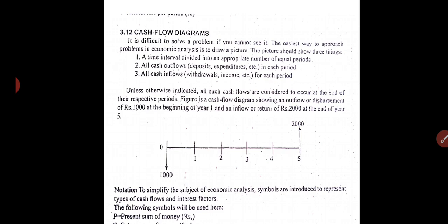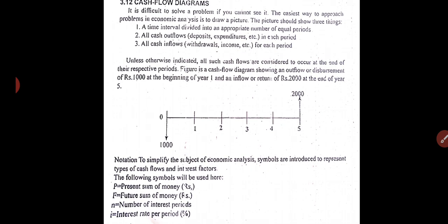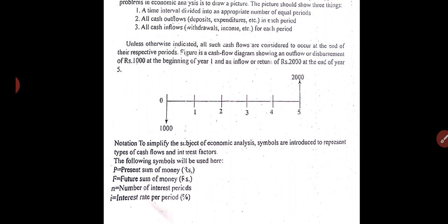To simplify the subject of economic analysis, symbols are introduced to represent the type of cash flows and interest factors. F is the future sum of money, P is the present sum of money, all in rupees. N is the number of interest periods, and I is the interest rate. If I write 8 percent, then I write 0.08 only.